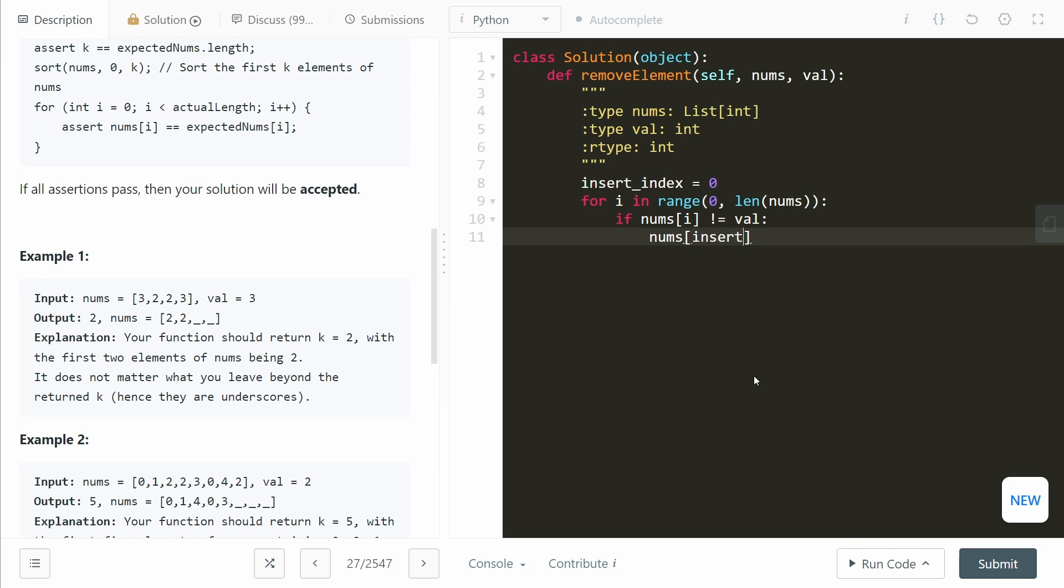So nums at insert index will now equal nums at i, and we increment insert index by one. At the end, we just return insert index. And that's it.